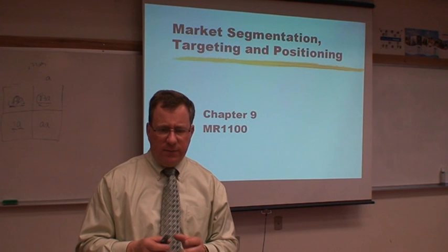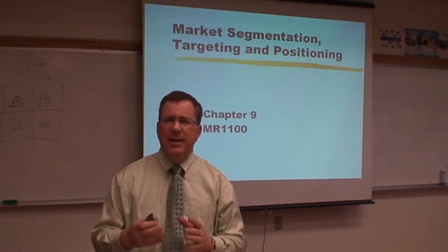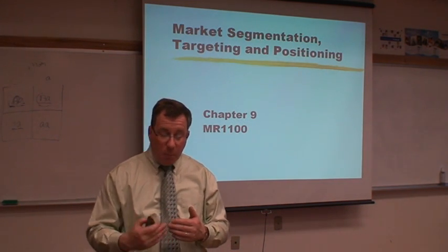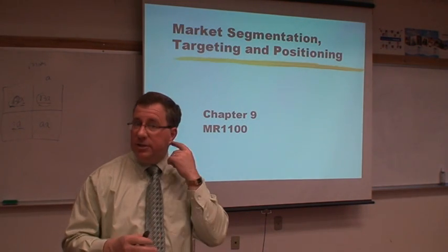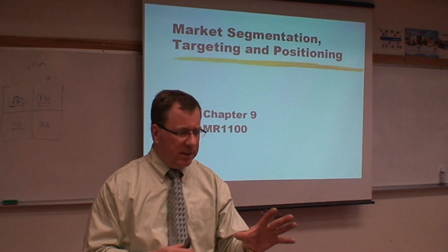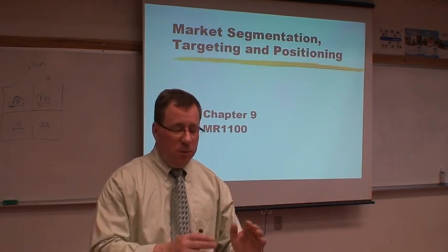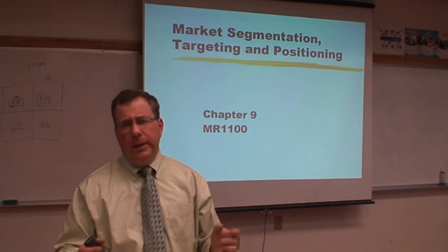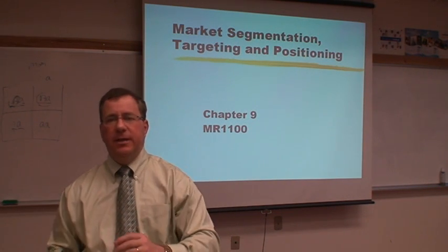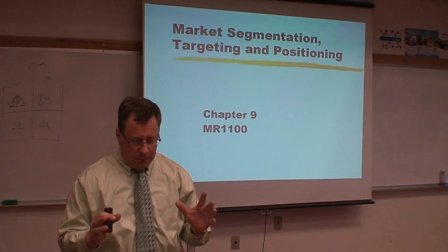So now we need to ask ourselves, as a company, what group are we going to focus on? We need to do some research before we make that decision, and the research process is called the segmenting process. Step one of any segmenting process is to group potential buyers into segments. Let's say 10% of the population would be interested in sporting shoes, 70% fall into the work shoe group, and the remaining 20% into casual shoes — so 10, 70, and 20.